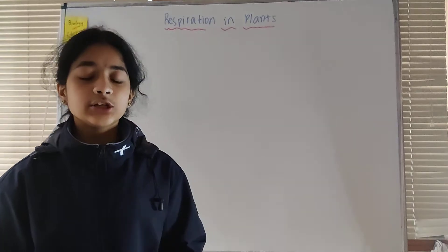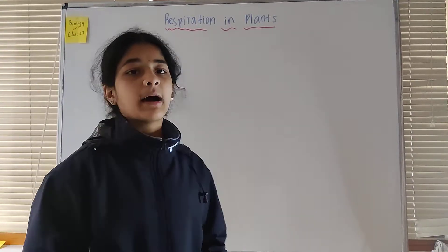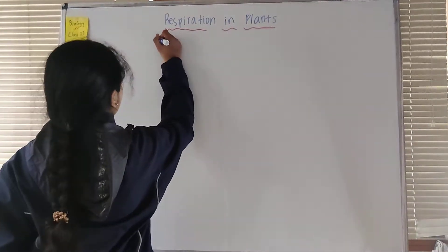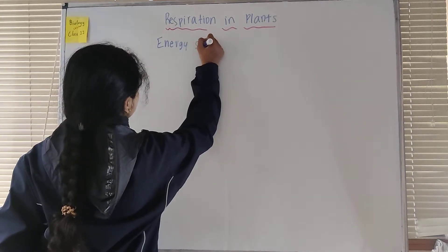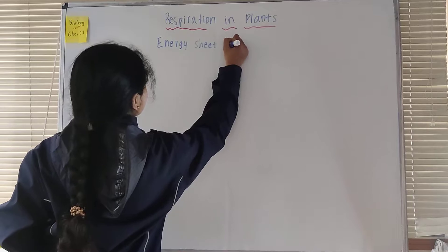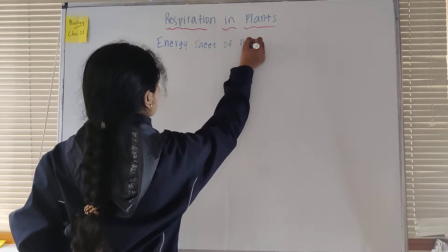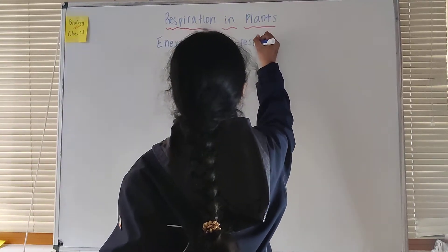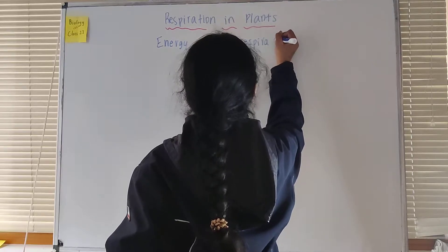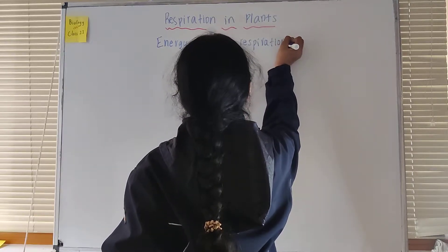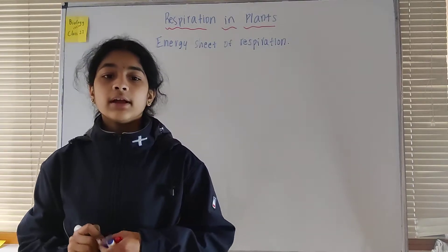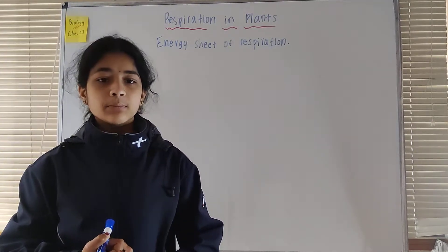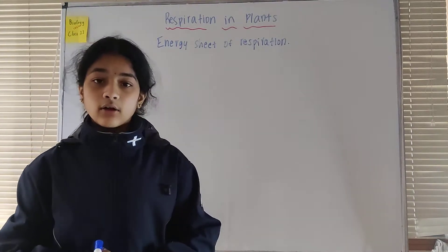In this video we will discuss the energy sheet of respiration, also called the respiratory balance sheet. This is where we calculate the number of ATPs which are being formed in the processes of glycolysis.